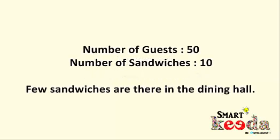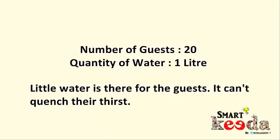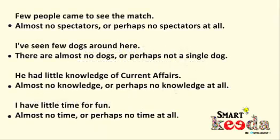Now let's see how these two quantifiers are used in different contexts. Suppose there are 50 people at a party and 10 sandwiches are there — we'll say 'few sandwiches are there in the dining hall.' Here, 'few' means as good as none. Similarly, if there are 20 people at a gathering and only one liter of water is available, we'll say 'a little water is there for the guests' — here 'little' suggests as good as nothing.